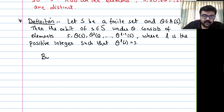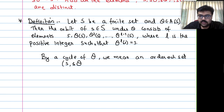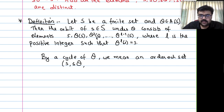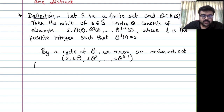By a cycle of theta, we mean an ordered set: starting at s, then theta(s), theta^2(s), ..., theta^{L-1}(s). So if theta has a cycle corresponding to s in S, the cycle is this ordered sequence. For example, in our example, cycle of 1 is (1, 2, 4) with L = 3.